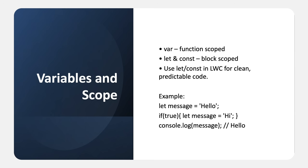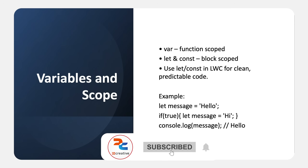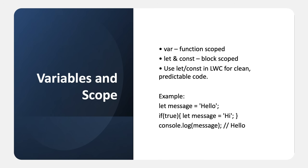We declare variables using var, let, or const. The difference between them comes down to scope — where the variable can be accessed. var is function-scoped, which means it's available anywhere inside the same function. let and const are block-scoped, which means they only exist inside curly braces. In lightning web components we always use let and const for cleaner and safer code.